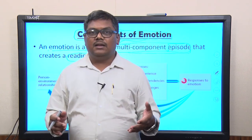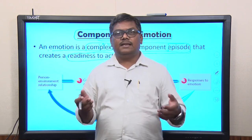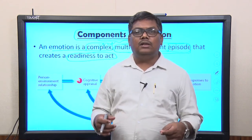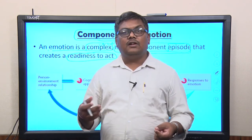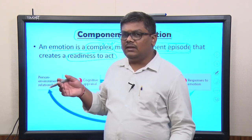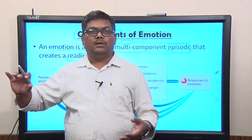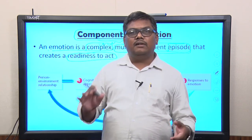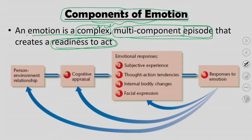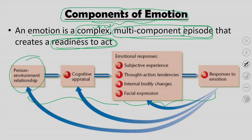Emotions are a multi-component episode: there are multiple parts, and any change in one part could lead to a change in other parts. What does emotion actually do? It leads to a readiness to act. The model says that an emotion starts with something called a person-environment relationship. If a person-environment relationship does not happen, then emotions will not start. Let us understand how this works: assume you are walking from place A to B and there is a village fair nearby.